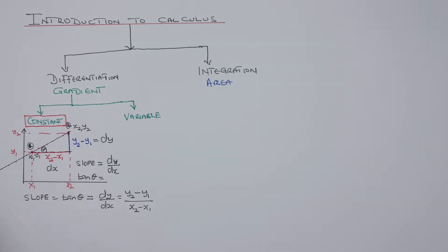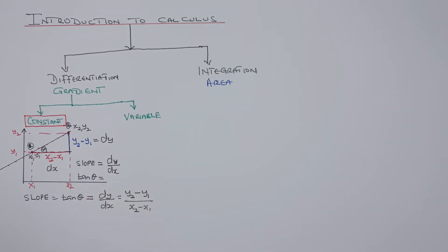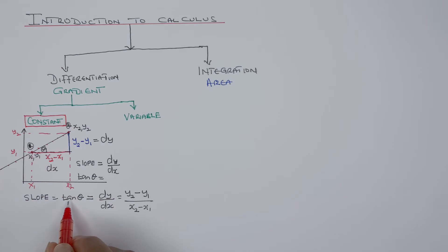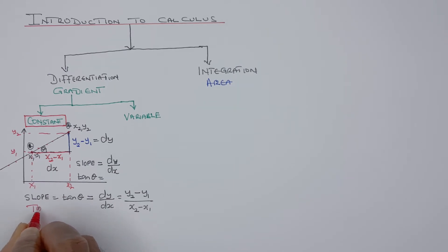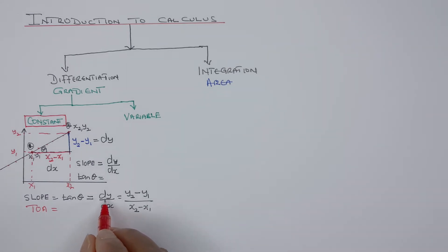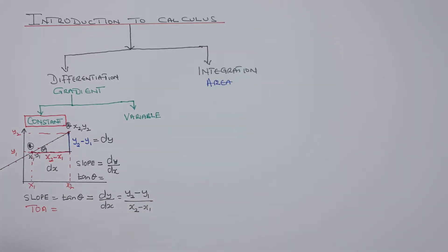The y and x are called differentials. That tangent line has an angle theta, and tan(theta) is dy/dx — opposite over adjacent using TOA. So tan(theta) equals dy/dx, which equals y2 minus y1 over x2 minus x1.